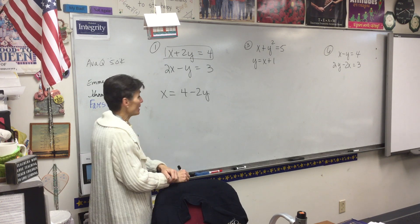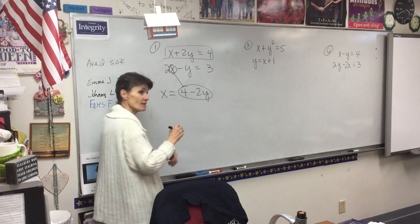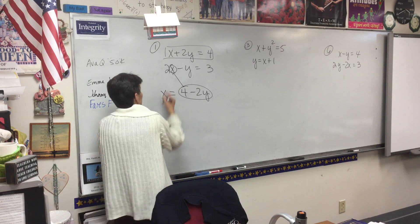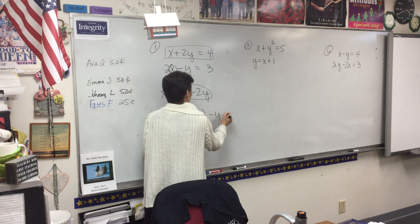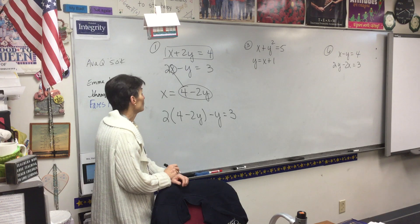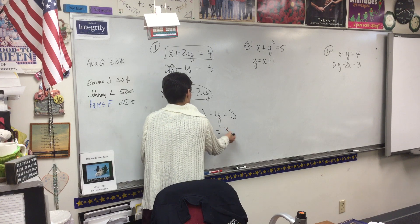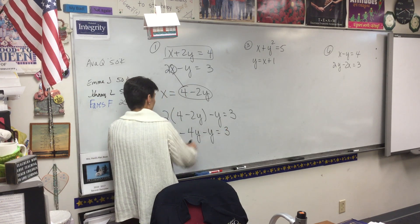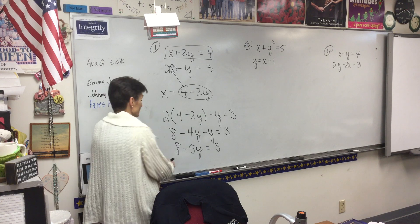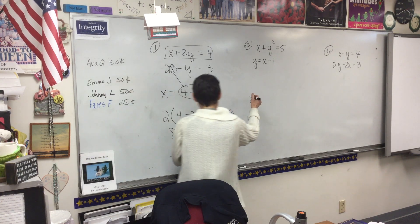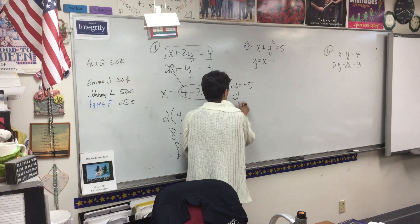That equation will say x equals 4 minus 2y. Then we'll take this guy right here and plug him in for the x in the other equation. So we'll have 2 times parentheses 4 minus 2y, minus y equals 3. We'll distribute 8 minus 4y, minus y equals 3. Collect like terms, 8 minus 5y equals 3. Subtract 8, so negative 5y equals negative 5, so y equals 1.